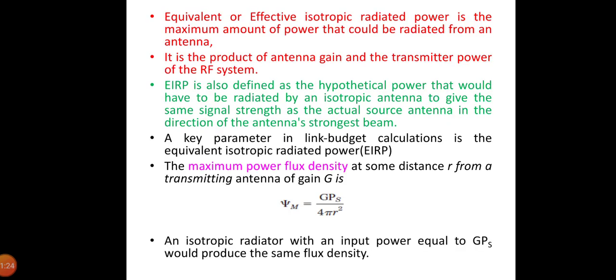Now let us see about the equivalent isotropic radiated power. A key parameter in link budget calculation is the equivalent isotropic radiated power, conventionally denoted as EIRP. The maximum power flux density at some distance r from a transmitting antenna of gain G is given by ψ_m equals GP_s divided by 4πr². EIRP is the maximum amount of power that could be radiated from an antenna.